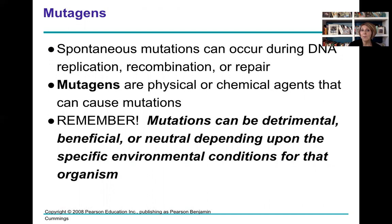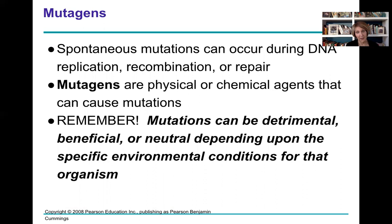Mutations can be spontaneous, occurring during DNA replication, recombination, or repair. Mutagens are physical or chemical agents that cause mutations — for example, ultraviolet radiation is a mutagen. Remember that mutations can be bad (detrimental), beneficial, or neutral, depending on the specific environmental conditions of the organism. Mutations are not inherently bad.